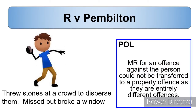The way to illustrate this is R v Pemberton. Here somebody threw stones towards a crowd in order to disperse them. Unfortunately the stones missed the people but hit a window, breaking it. This illustrates that the mens rea for an offence against the person can't transfer to an offence against property because they're entirely different offences.